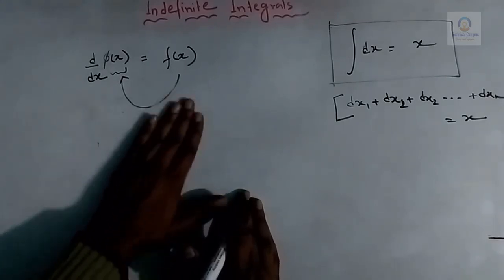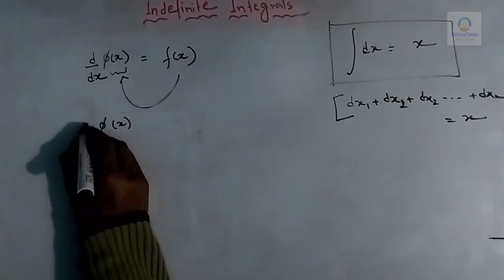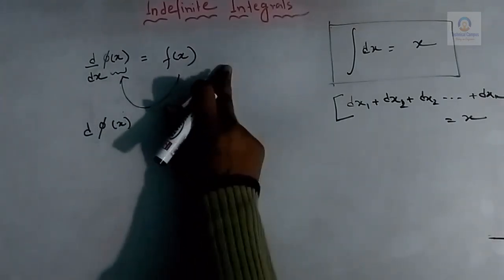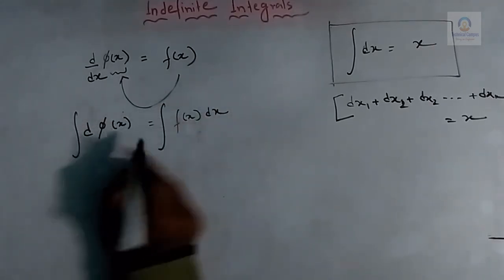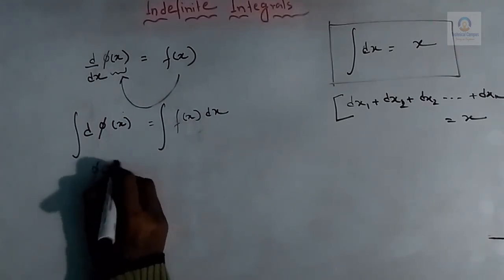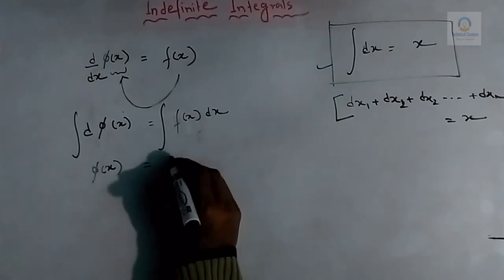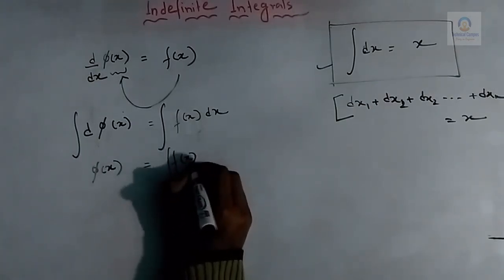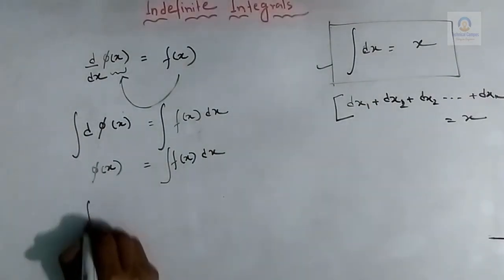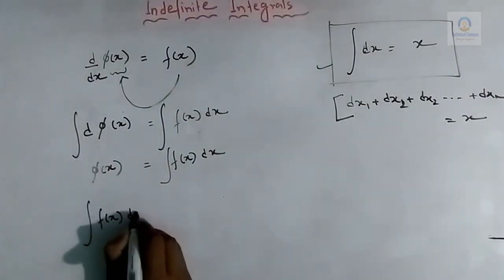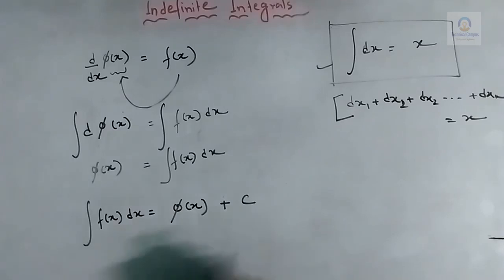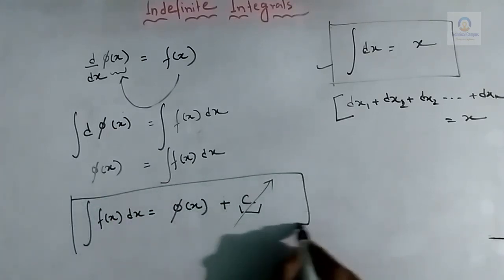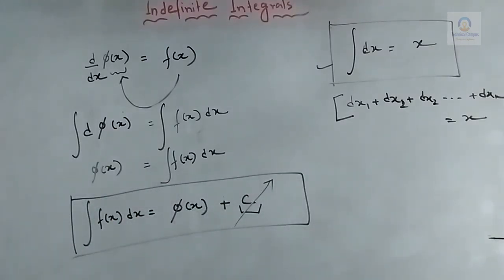To integrate f of x and get phi of x: suppose we have d(phi of x) = f of x dx. If we multiply dx on both sides and integrate both sides, we get phi of x = integration of f of x dx. The better way to write this is: integration of f of x dx is equal to phi of x plus a constant C. Why we take this constant, we will understand through an example.